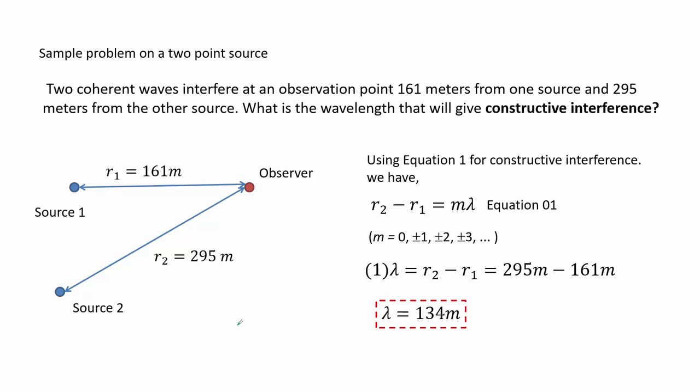Here we have a sample problem on double slits. Two coherent waves interfere at an observation point 161 meters from one source and 295 meters from the other source. What is the wavelength that will give constructive interference?